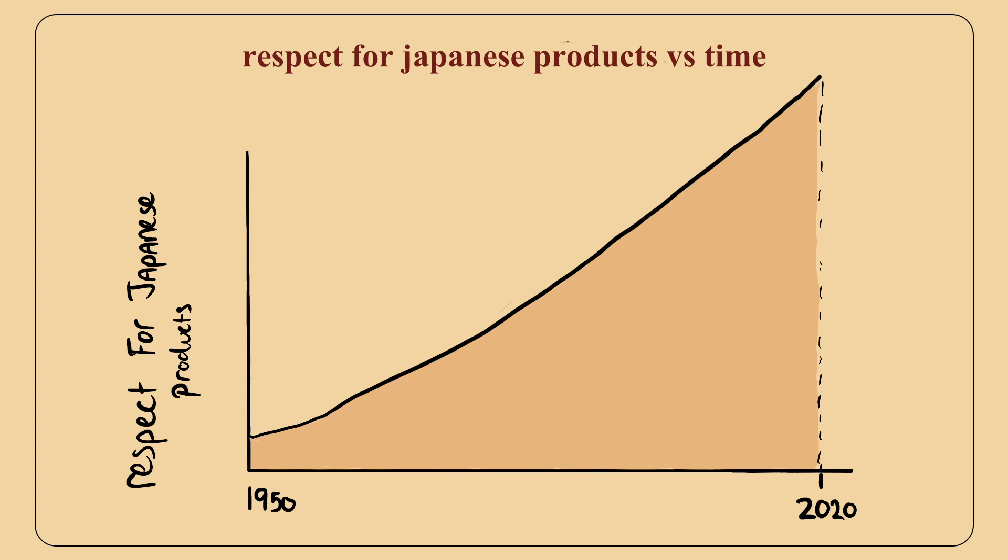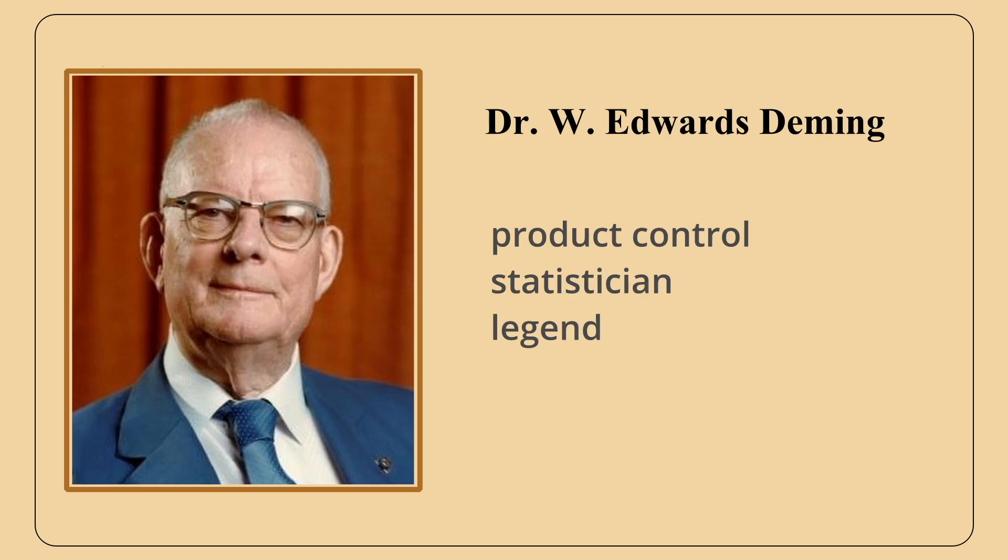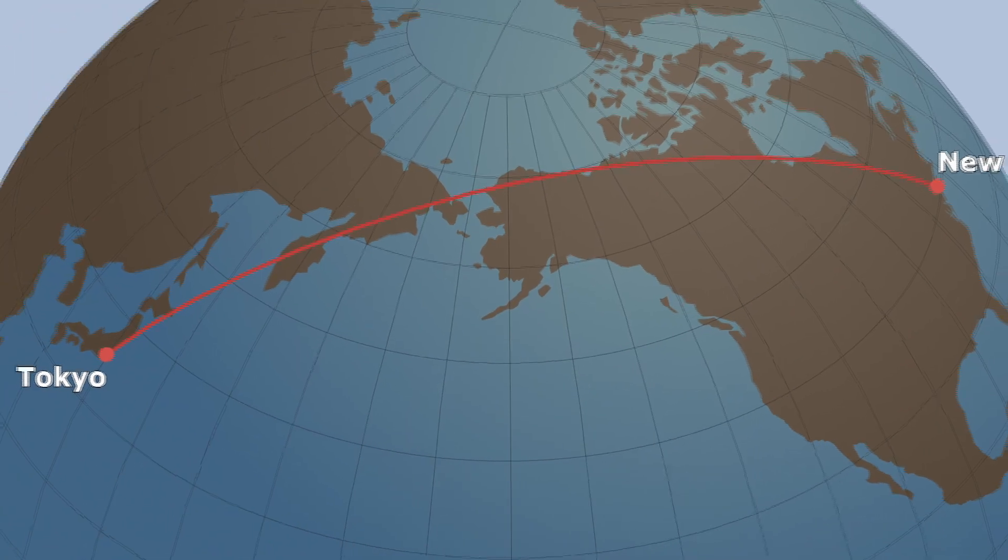In the 1950s after World War II, the well-respected opinion for Japanese products and their quality didn't exist yet. This was until a man named Dr. Deming, an American quality expert and statistician, was invited to help improve the quality of Japanese products.